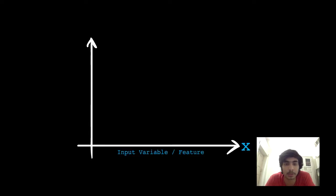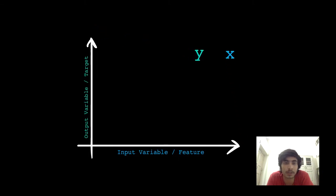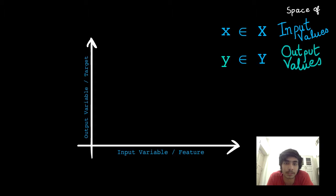X is called the input variable or feature. Y is the output variable or target and all the values of X and Y belong in the sets X and Y respectively.